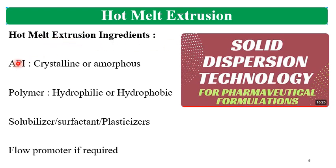The ingredients for hot melt extrusion are: API, polymer, solubilizer, and flow promoters if required. The API may be crystalline or amorphous. The polymer may be hydrophilic or hydrophobic. Surfactants, plasticizers, and flow promoters such as colloidal silicon dioxide can be used.